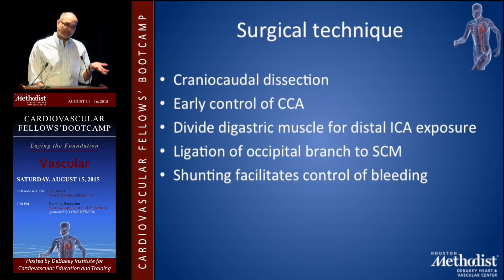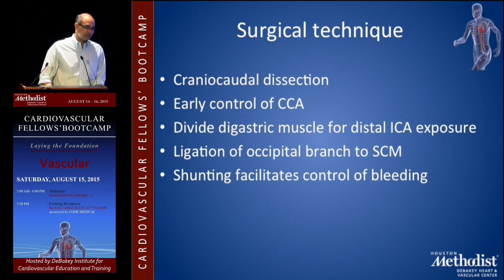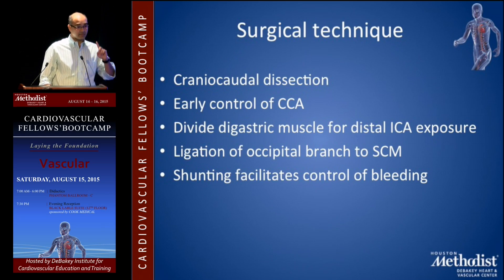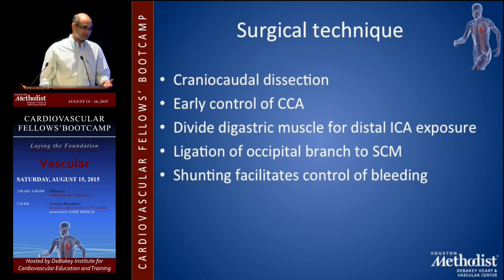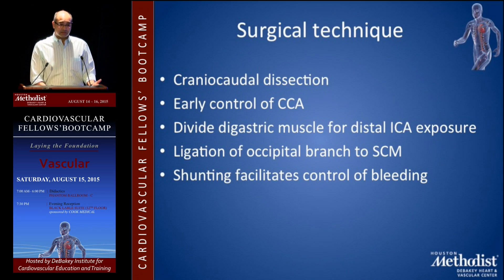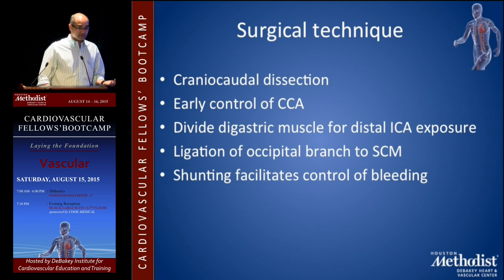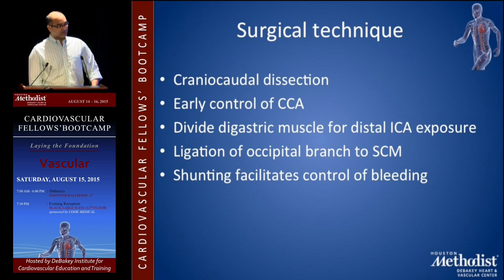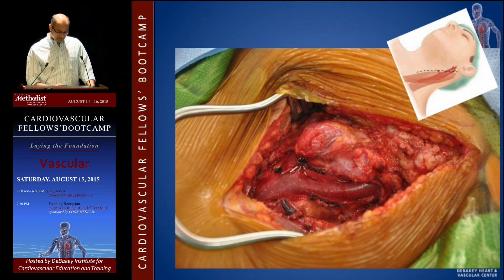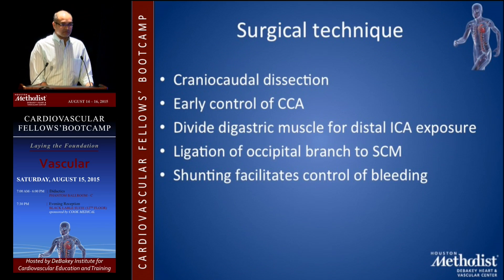The key to resection — and this comes up in oral boards — is a cranial-caudal dissection starting from the bifurcation and working upward, in the peri-adventitial plane. That is the buzzword. You must maintain the peri-adventitial plane, have early control of the common carotid, and may need to divide digastric muscles superiorly for more ICA exposure. You may also need to ligate the occipital branch to the sternocleidomastoid, as it can feed the tumor from behind. Be ready with carotid interposition — have a vein and prosthetic available, though vein is preferred for carotid replacement.